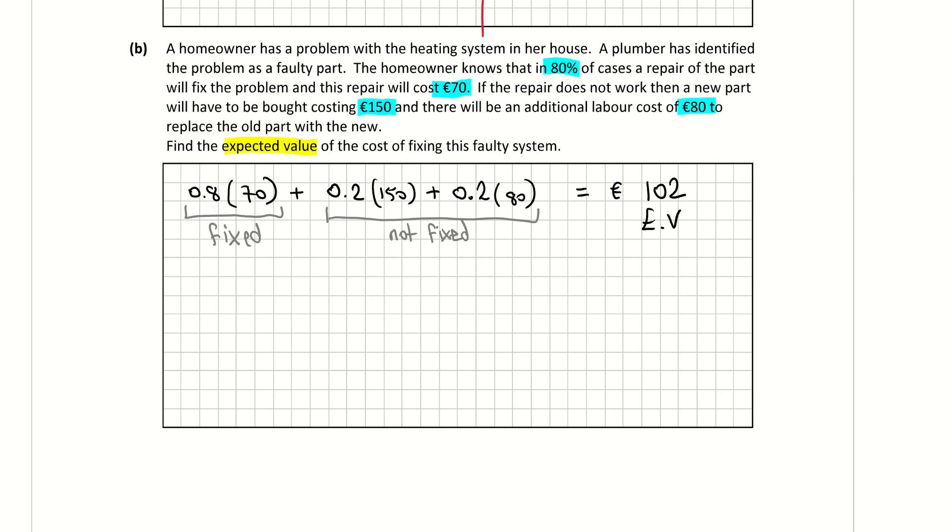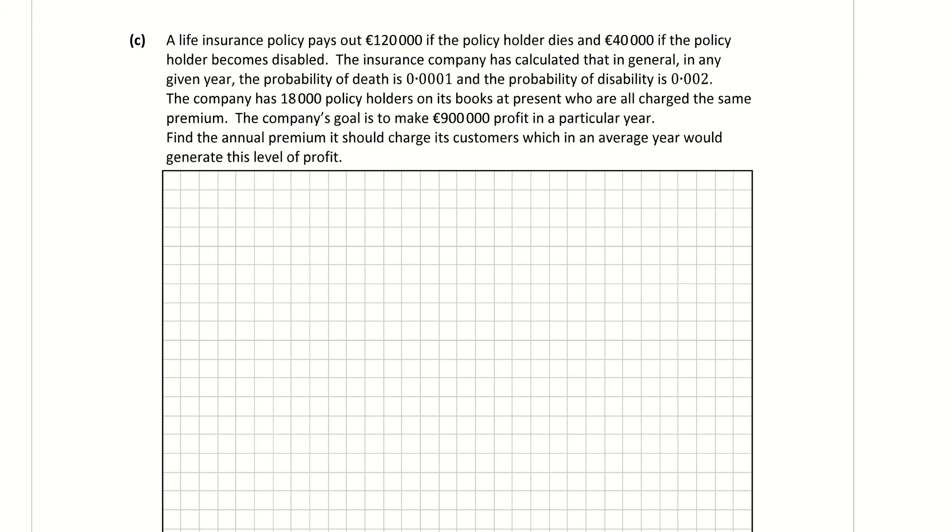Part C, again, is completely different. It's talking about a policy. So it's text-heavy here again, so you just read it yourself first of all. But what it's going through here is €120,000 is paid out if a person dies, €40,000 if they become disabled. The insurance company have found out. So let's link these together. So €120,000 if you die. Probability of dying, 0.001. So let's find that expected value. So that's €120,000 multiplied by 0.0001, which is €120. So basically in every policy, €120 must be set aside for the likelihood of someone dying.